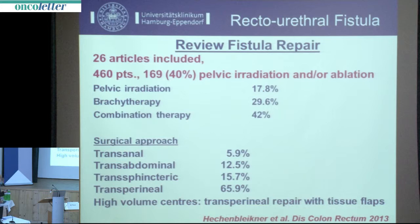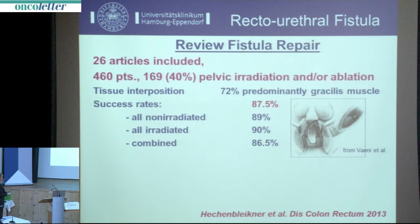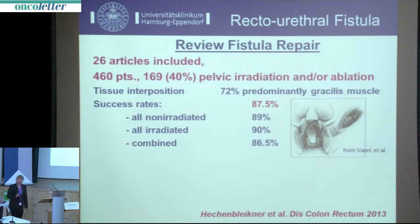An excellent review by Hechenpleichner included 26 articles and 460 patients; 40 percent had received irradiation, around one-third brachytherapy, and 42 percent combination therapy. The preferred surgical approach in high-volume centers is the transperineal approach with tissue flap. For tissue interposition, the gracilis muscle was mainly used. The success rate is very high, with no difference between irradiated and non-irradiated patients regarding fistula closure.